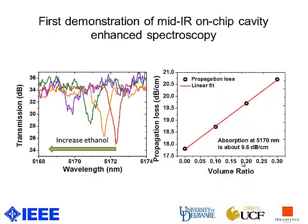This is the transmission spectrum from the same resonance peak of the same resonator in different concentrations of ethanol. As you can see, with increasing ethanol concentration, the resonance peak blue-shifts and the extinction ratio decreases, which means absorption is increased. Through Lorentzian fitting of the resonance peak, we can get the propagation loss of the resonator under different conditions. Using linear fitting, we can get the absorption of pure ethanol at particular wavelengths.